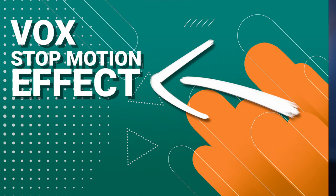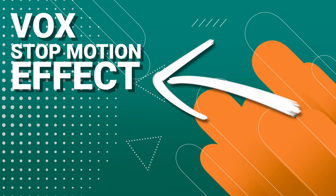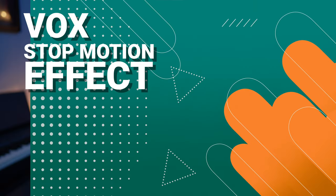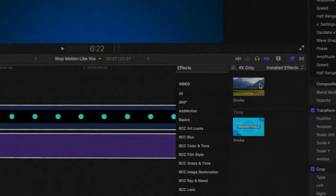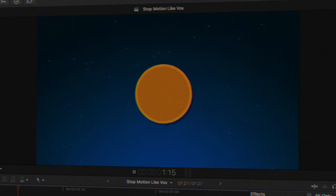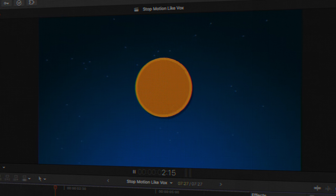Today using Apple Motion, we are going to recreate the stop motion effect that you see in pretty much every single Vox video. We're also going to create it as an effect preset so you can drop it on anything you want within Final Cut Pro.